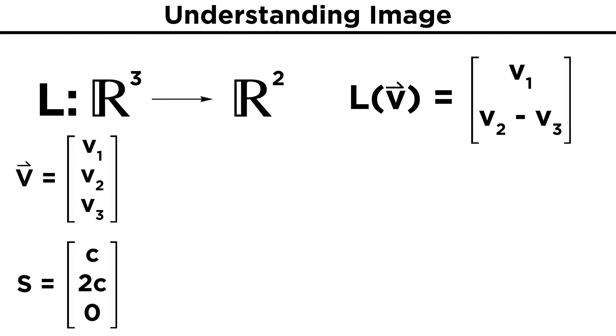For this example, let's say our subspace of V is given by the vectors of length three, where the second element is two times the first element, and the third element is zero.